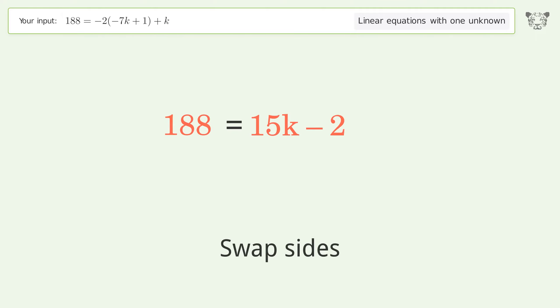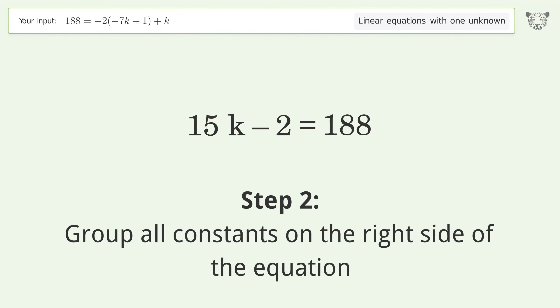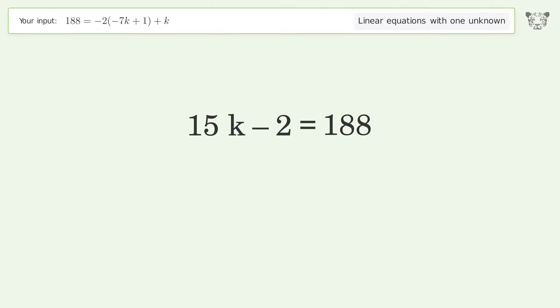Swap sides. Group all constants on the right side of the equation. Add 2 to both sides. Simplify the arithmetic.